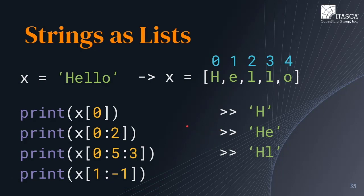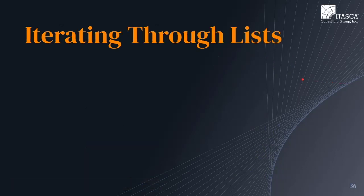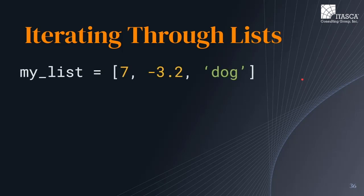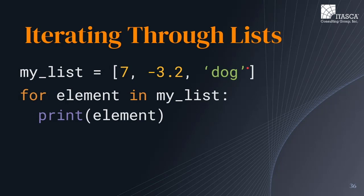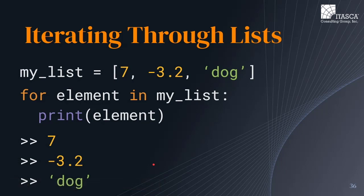Negative indices are a useful way to partition your string or list without having to use the len command to figure out the length. So accessing from the first index to the negative one-th index — since this is from the first inclusively to the negative first exclusively — will simply return 'ell'. Now another feature of Python is that you can use for loops to iterate through lists. Additionally, lists don't have to contain the same type of data — they can actually contain any different types of data within them. You can use a for loop structured as 'for element in list_variable' and then do some sort of code execution upon each element. In this example, first 7 will be outputted since it's the first element, followed by -3.2, followed by the string 'dog'.